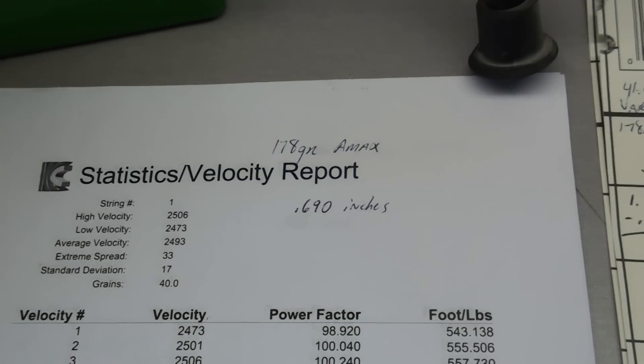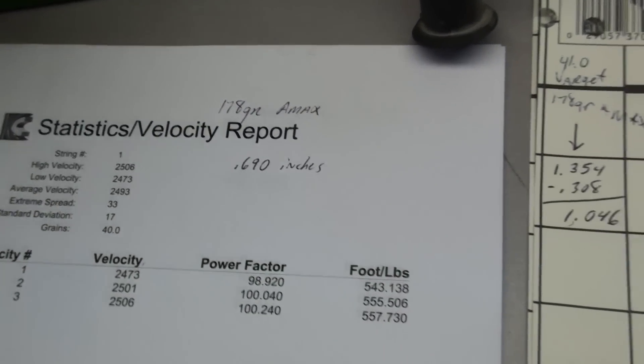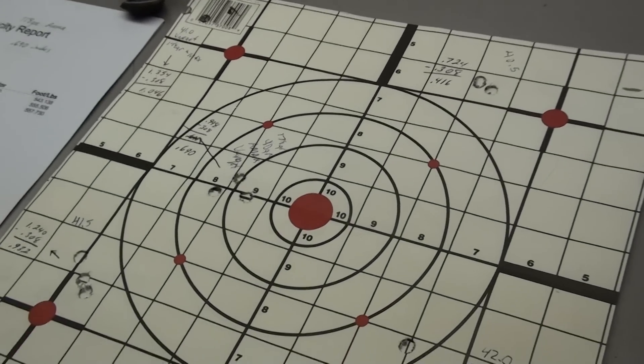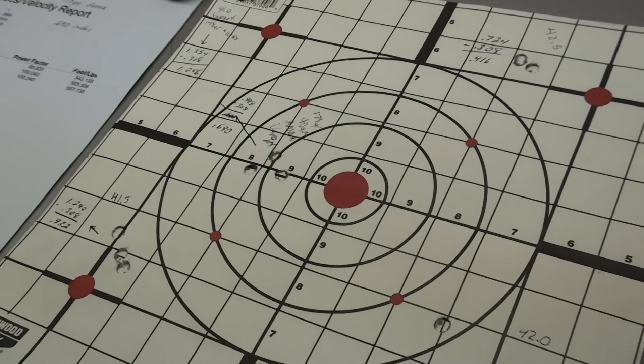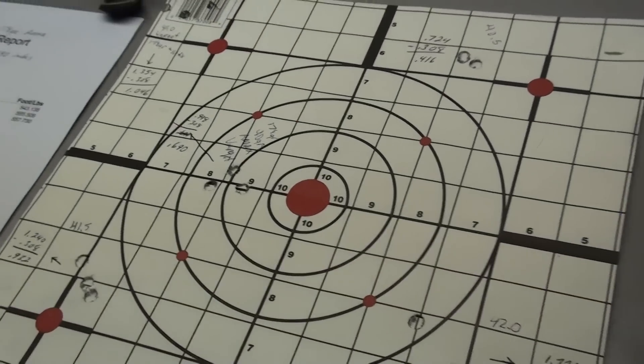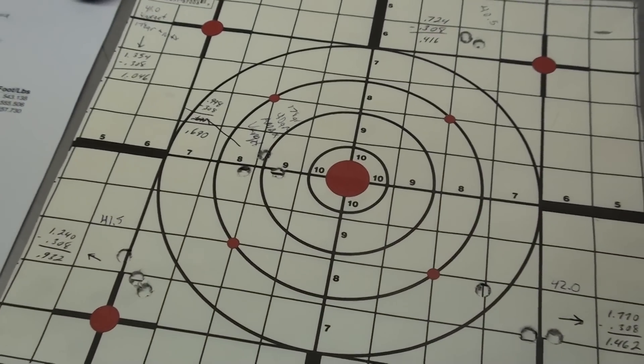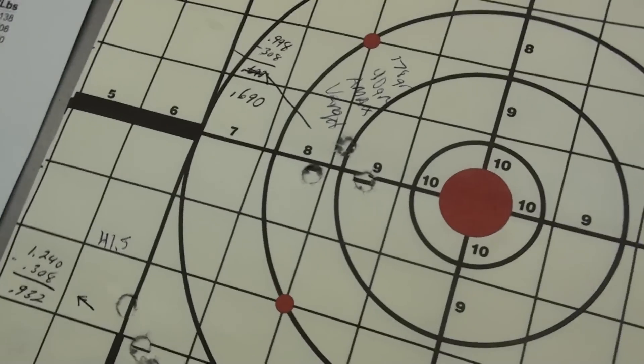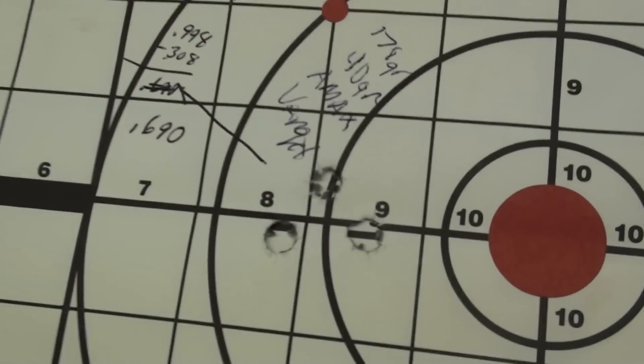I'm using 178 grain AMAX, so I decided to do a ladder test at 100 yards. I need to do one at 300 and see how the groups look like at 300 yards and 100 yards, but 100 yards is what I could do here in California. So let's get started. Here's my first group.